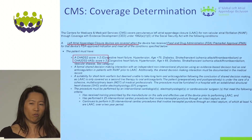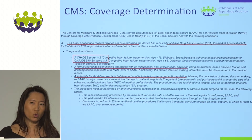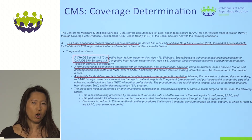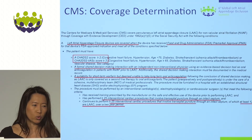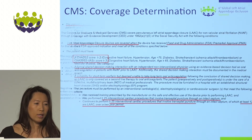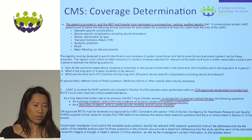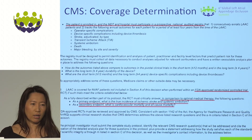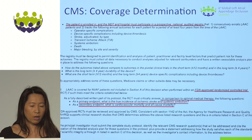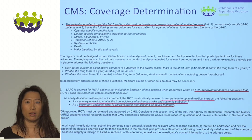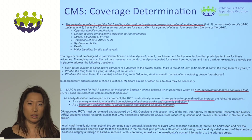The CMS indications for coverage require a CHA₂DS₂-VASc score of two or greater, a CHA₂DS₂-VASc of three or greater, with patients suitable for short-term warfarin but deemed unable to tolerate long-term anticoagulation. Additionally, patients must be enrolled in a registry followed prospectively, or be in a randomized study comparing to medical therapy with a primary endpoint of stroke or systemic embolization. There are some restrictions, but coverage is still relatively broad in the US, and hopefully such coverage determination can impact globally to increase the volume of these procedures. Thank you for your attention.